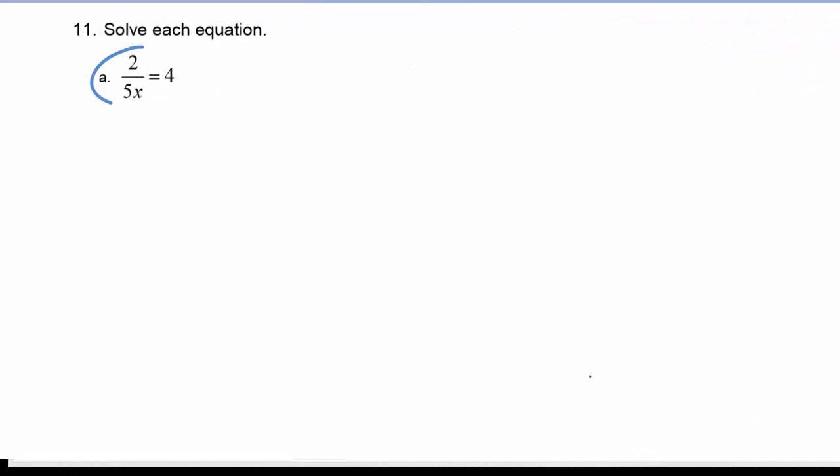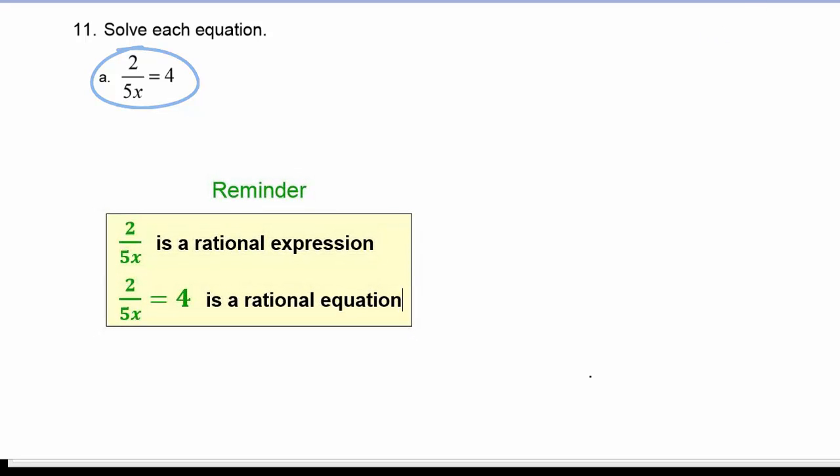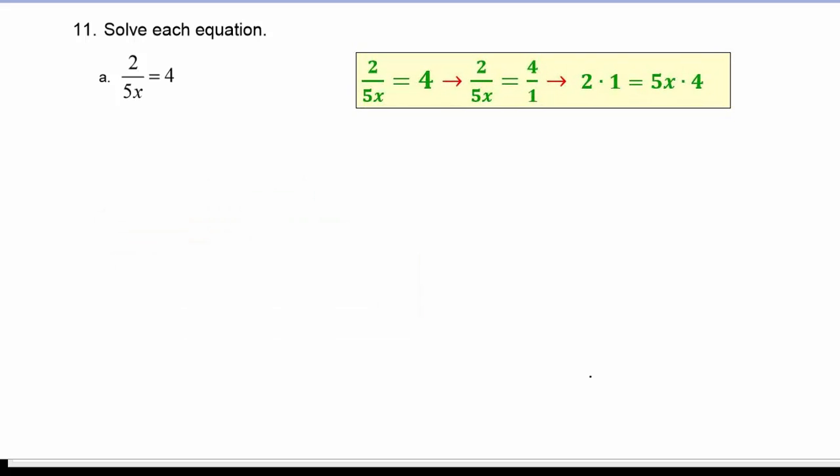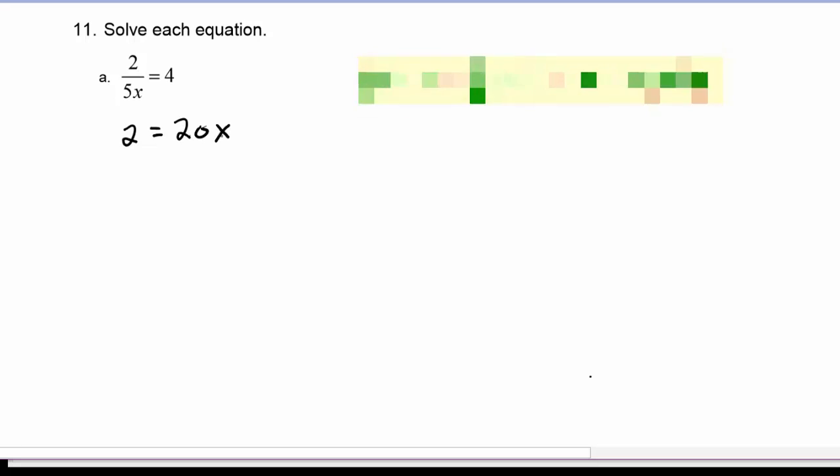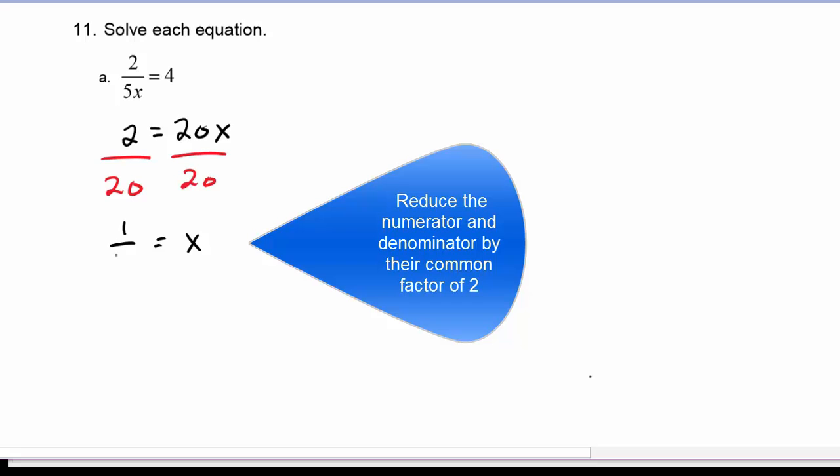Let's look at example A. We have a rational equation, 2 over 5x equals 4. All we need to do here is cross multiply, so the 5x is going to multiply the 4, so we get 2 is equal to 20x. We're going to divide both sides by 20, and we will get that x is equal to 1 tenth.